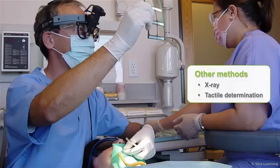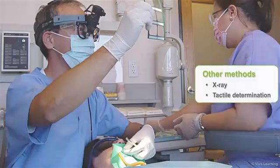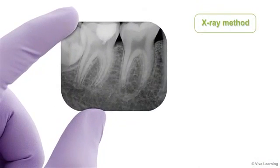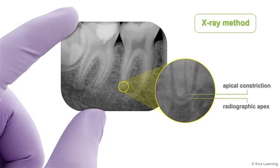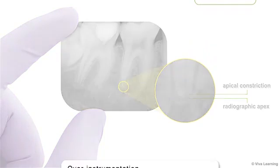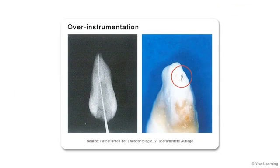Each of these other methods has some serious drawbacks. Although x-rays are the most commonly used technique, since the apical constriction is not exactly visible on the two-dimensional x-ray image, it is simply assumed to be located one to two millimeters away from the radiographic apex. The working length is then determined based on that assumption. When these assumptions don't hold true, over-instrumentation can take place.